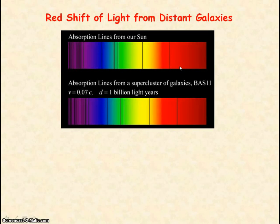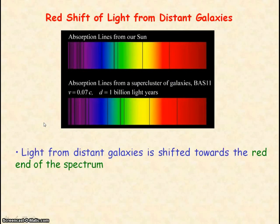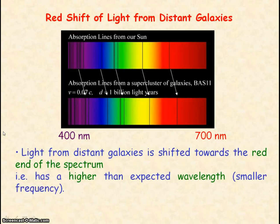Here we have the spectrum of light from our sun, and the dark lines are the absorption lines — the absence of specific wavelengths of light being absorbed by the atmosphere of the sun. Here you have the spectrum of light from a group of galaxies that are one billion light years away, and the light from these distant galaxies is red shifted. That means the absorption lines have shifted towards the red end of the spectrum. The wavelength range for visible light is from 400 nanometers for violet light to 700 nanometers for red light, so we're seeing a higher than expected wavelength for the light from distant galaxies.